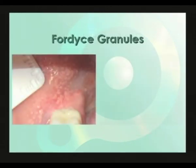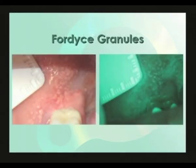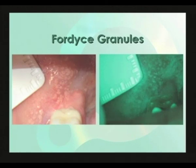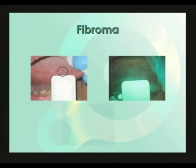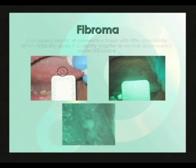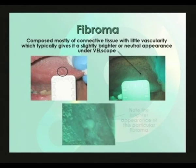The classic appearance of Fordyce granules under white light and their corresponding appearance under VELscope make them fairly straightforward to identify. Fibromas are composed mainly of connective tissue with little vascularity and thus appear neutral or slightly brighter under VELscope.